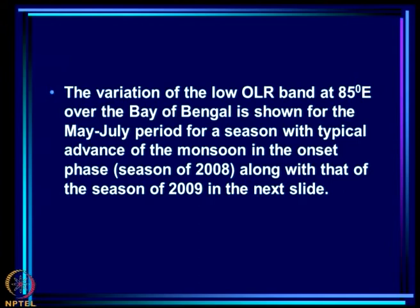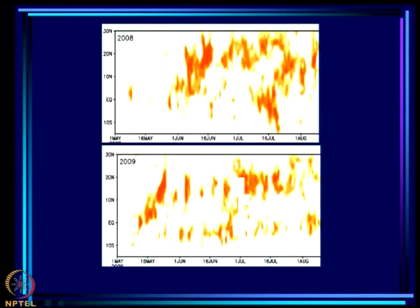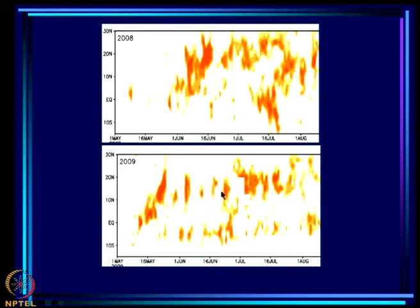We will look at the variation of low OLR band at 85 degrees east over the Bay of Bengal for the May to July period, comparing 2008 — a season with typical advance of the monsoon — with the aberrant 2009 onset phase. In 2008, after the northward surge the band persists in the monsoon zone. In 2009, we got a reasonably good onset but after that the band kept appearing over the bay for very short periods of only 2 to 3 days.